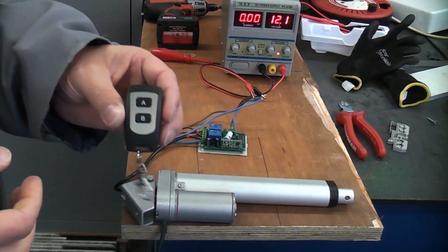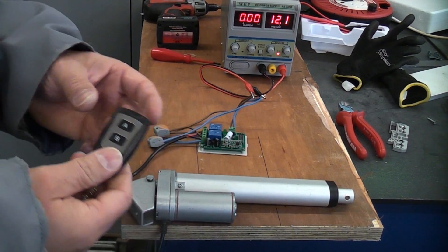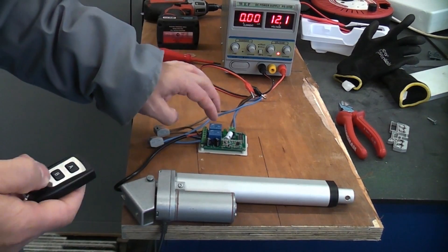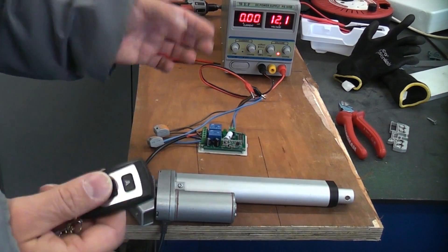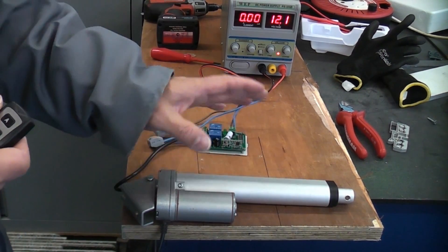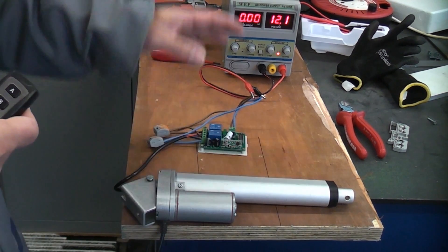So this is a very useful piece of kit. If you're making something at home and you want it to be remote controlled you can do it quite simply by buying one of these circuit boards with the remote. It wasn't expensive, that was about 15 pounds, and in this case I've linked it up to a linear actuator and the power supply.